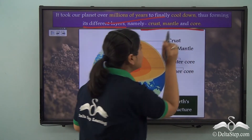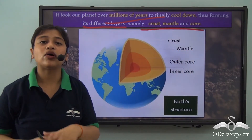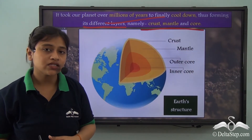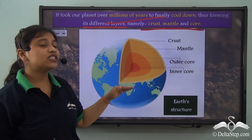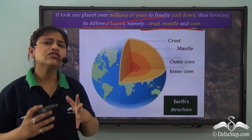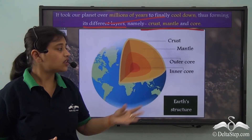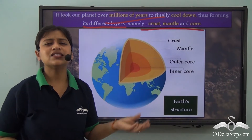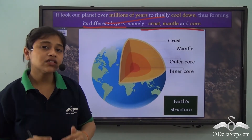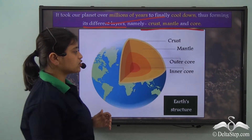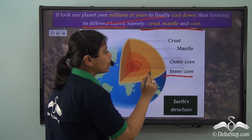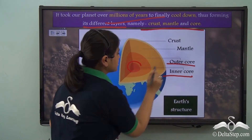These are the three most important layers of the earth, forming the structure of the earth. We must also remember that the core, the innermost layer of the earth, is further divided into the inner core and the outer core, as you can see.